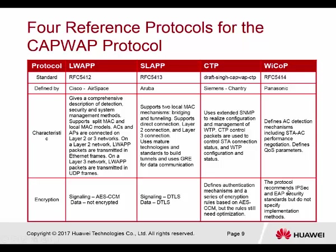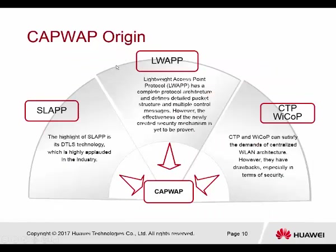WICUP recommends IPsec and EAP security standards but does not specify the implementation method. CAPWAP takes the best features from the different protocols: the highlight of SLAPP is the DTLS technology which is widely adopted in the industry, and from LWAPP comes the complete protocol architecture defining the packet structure and multiple control messages. CTP and WICUP help certify the demand of centralized WLAN architecture.